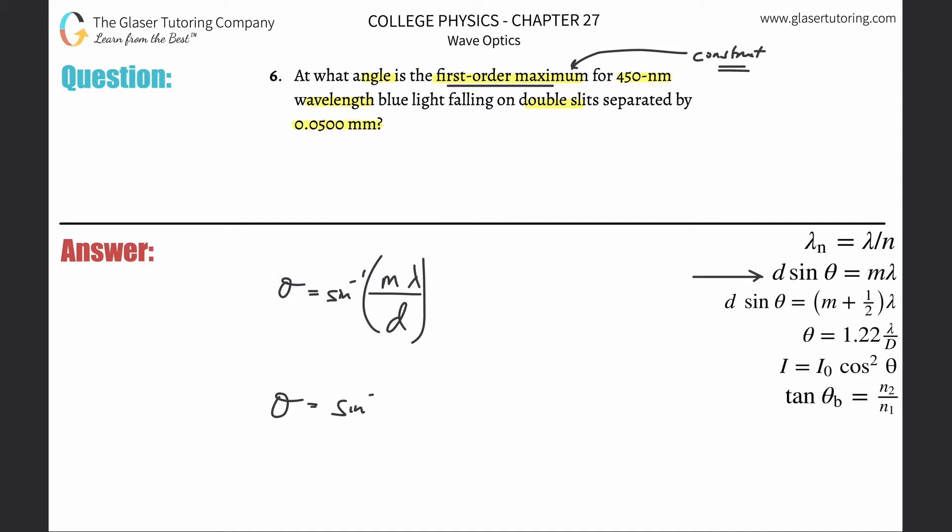Okay, so all we now need to do here is plug in sine minus one of the first order maximum, so m is one, the wavelength of the light—careful, needs to be in meters this time—450 times 10 to the minus ninth, then divide that by the distance between the slits. That's in millimeters, but we need that in meters, so take 0.05 and multiply it by 10 to the minus 3.